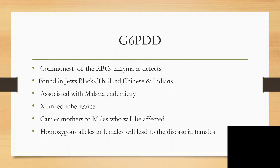Carrier mothers will pass the condition to male offspring, who will be affected. Sometimes we find females with G6PD deficiency — it is not common among females, but when they inherit homozygous alleles for G6PD, they will present with the disease.